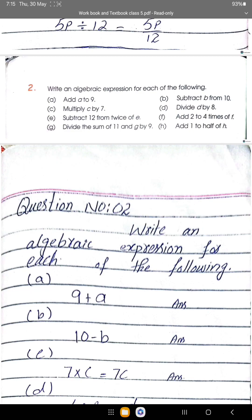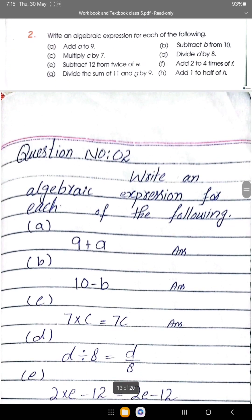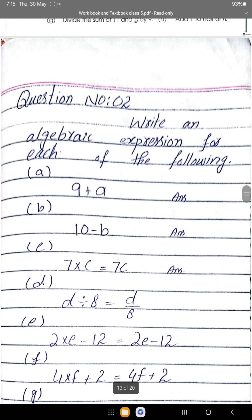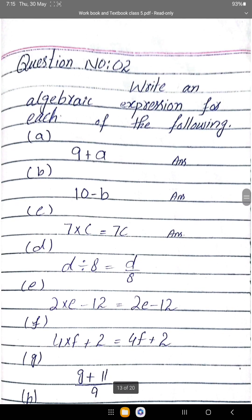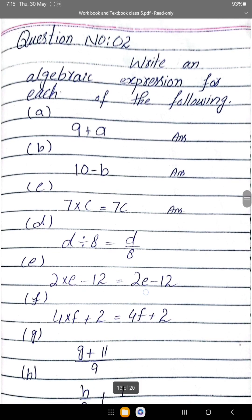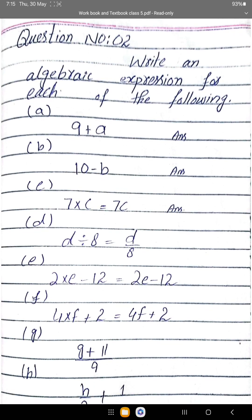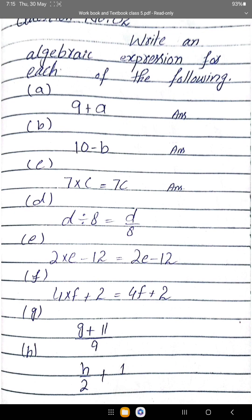Solution: a) a plus 9. b) 10 minus b. c) 7 times c equals 7c. d) d divided by 8, equals d over 8. e) 2 times e equals 2e, subtract 12 gives 2e minus 12. f) 4f plus 2. g) g plus 11, divided by 9, equals (g plus 11) over 9. h) h over 2 plus 1. These are the answers for question 2.